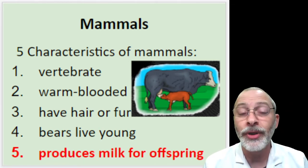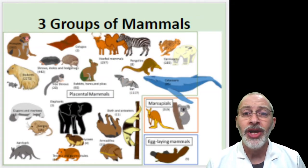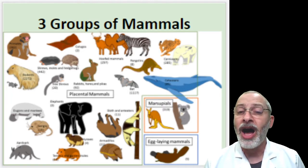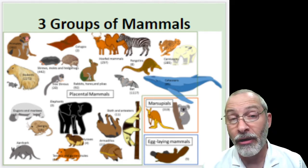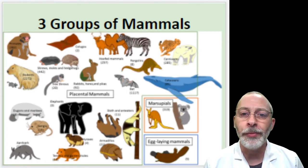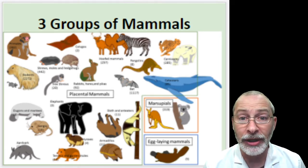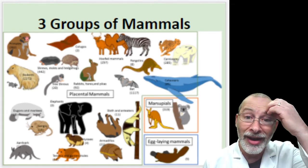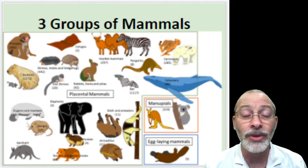Be sure to study those five characteristics — you will be tested on them later in the week. Now let's transition to the three different groups of mammals, because not all mammals are the same. The first group is the placental mammals. As you can see from this picture, placental mammals contain the most variety and the greatest number of mammals. We as human beings are considered placental mammals.